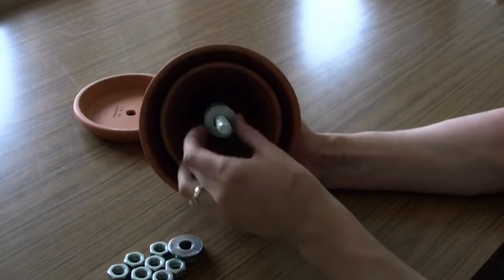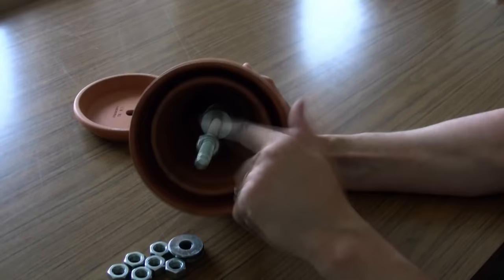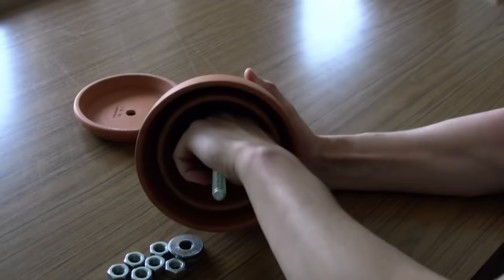Okay, now put another washer on, followed by another nut. And you'll want to do this six more times. And the reason you want all these nuts and washers is because you're trying to capture as much of the heat as you can. The metal stores the energy from the candles, and then radiates it out to the pots. The more metal, the more heat.